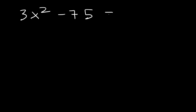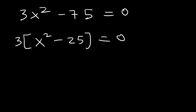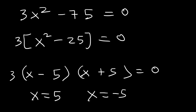Now what about 3x squared minus 75? We can't take the square root of 3 or 75 — they're not perfect squares. However, we can take out the GCF, which is 3. 3x squared divided by 3 is x squared, and negative 75 divided by 3 is negative 25. Now we can factor it as a difference of squares. The square root of 25 is 5, so the two answers are x is equal to 5 and x is equal to negative 5.